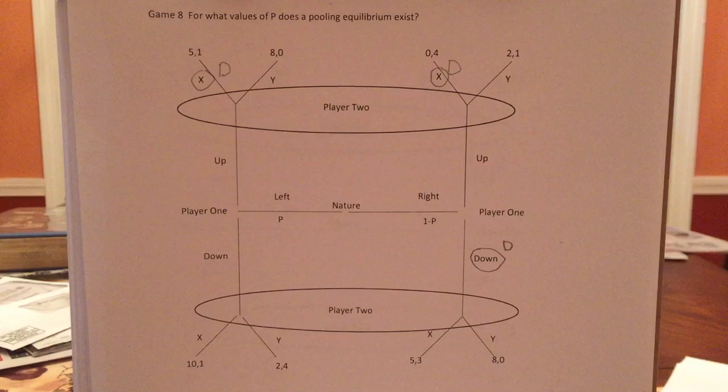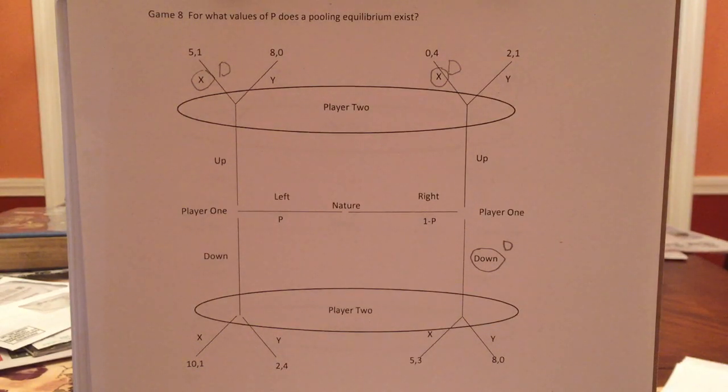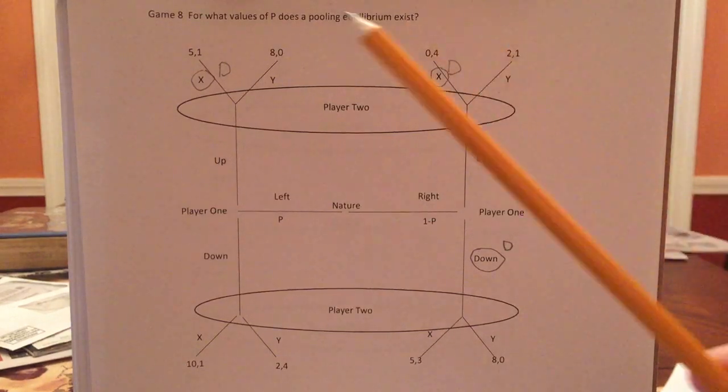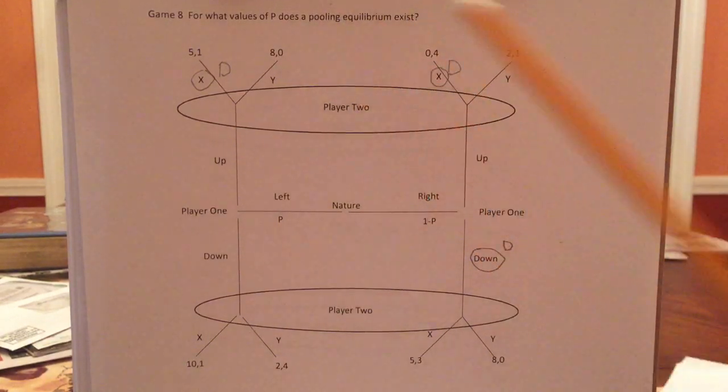Ah, but there is something. There is a hint. This game is not asking us to solve for all the equilibria. It's just asking us to solve for the pooling equilibria. Remember, pooling equilibrium means both types of player one, lefty and righty, do the same thing.